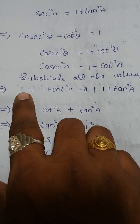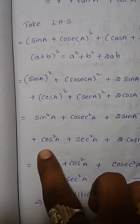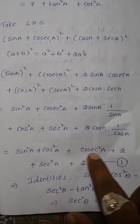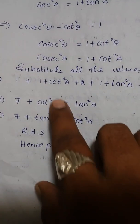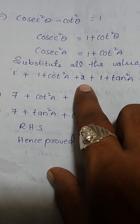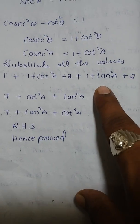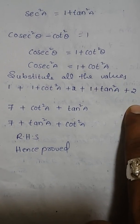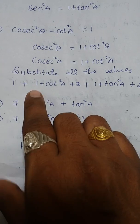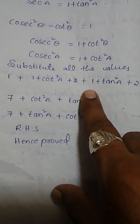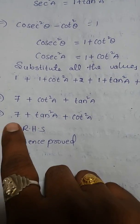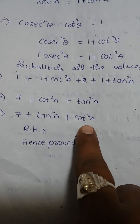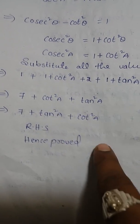So sin²A + cos²A = 1, cosec²A = 1 + cot²A, plus 2, and sec²A = 1 + tan²A, plus 2. Adding: 1 + 1 + 1 + 2 + 2 = 7, giving 7 + tan²A + cot²A, which equals the right-hand side. Hence proved.